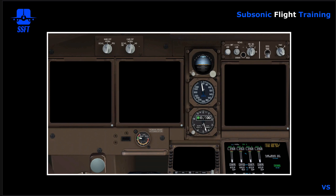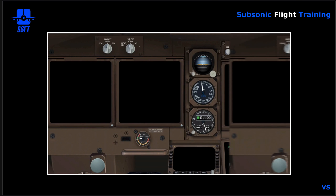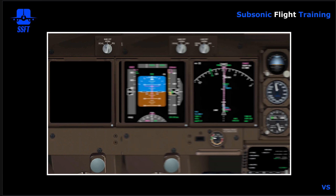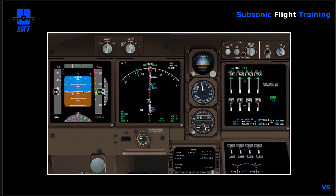If we take the standby power selector and put it in auto again, then you can see we have the displays as they should be: the PFD on the outboard, the ND on the inboard, primary EICAS on the upper DU, and secondary EICAS on the lower DU.